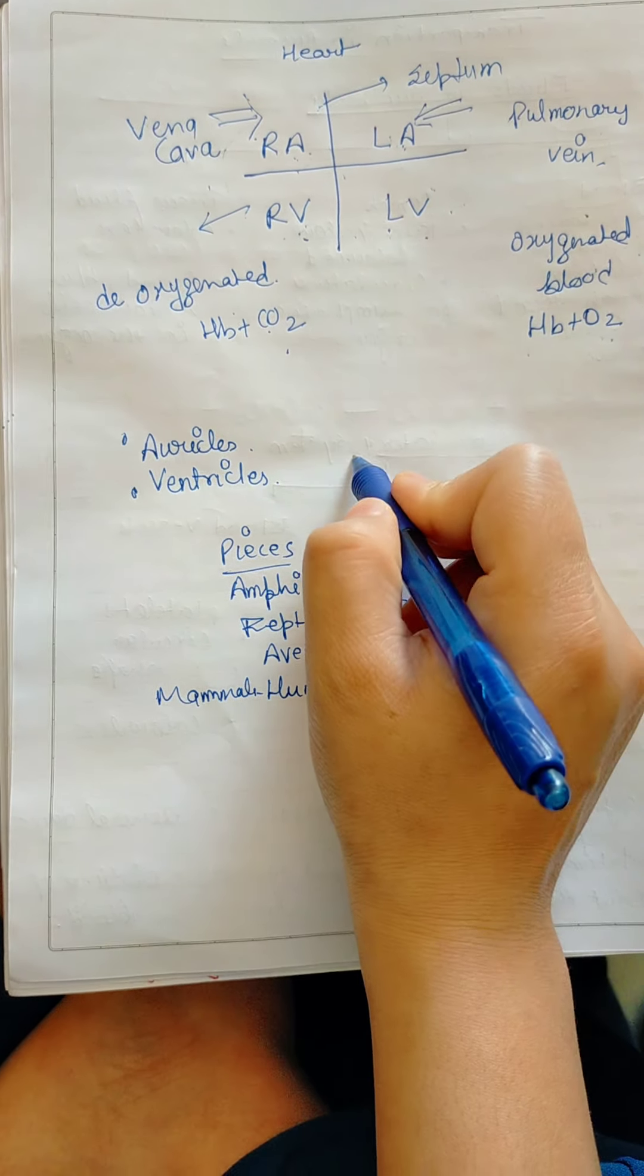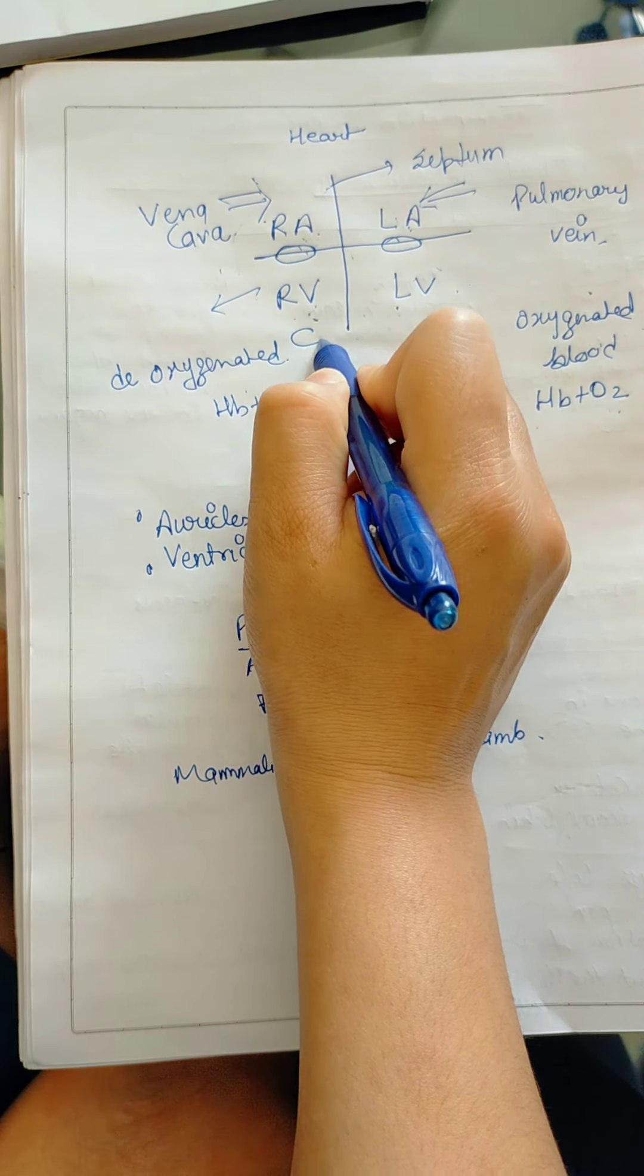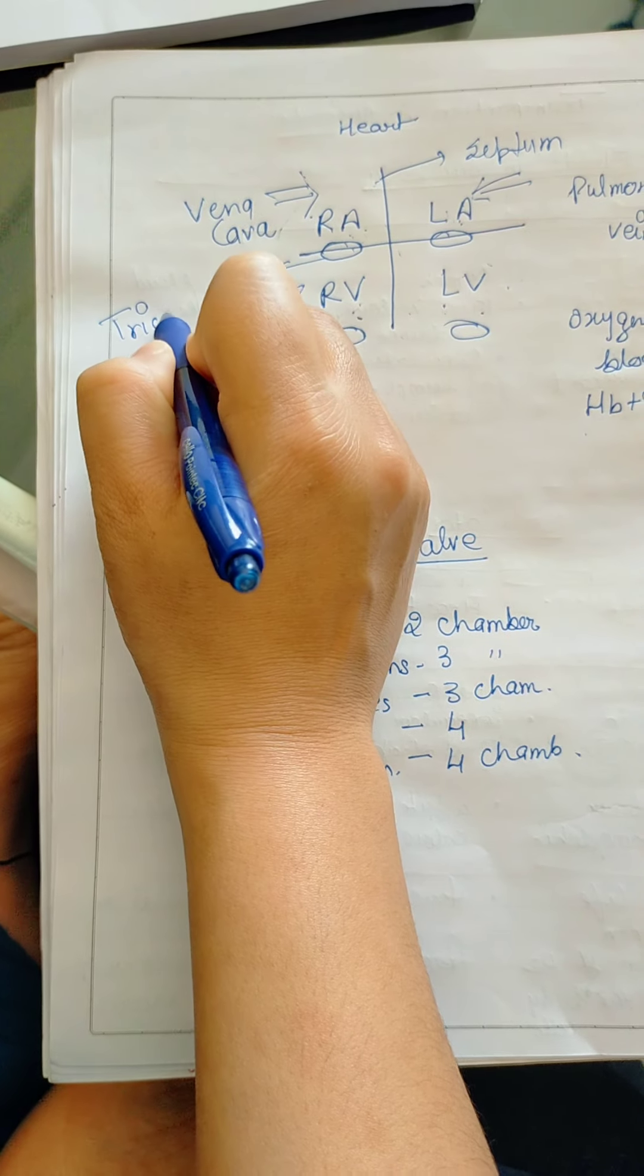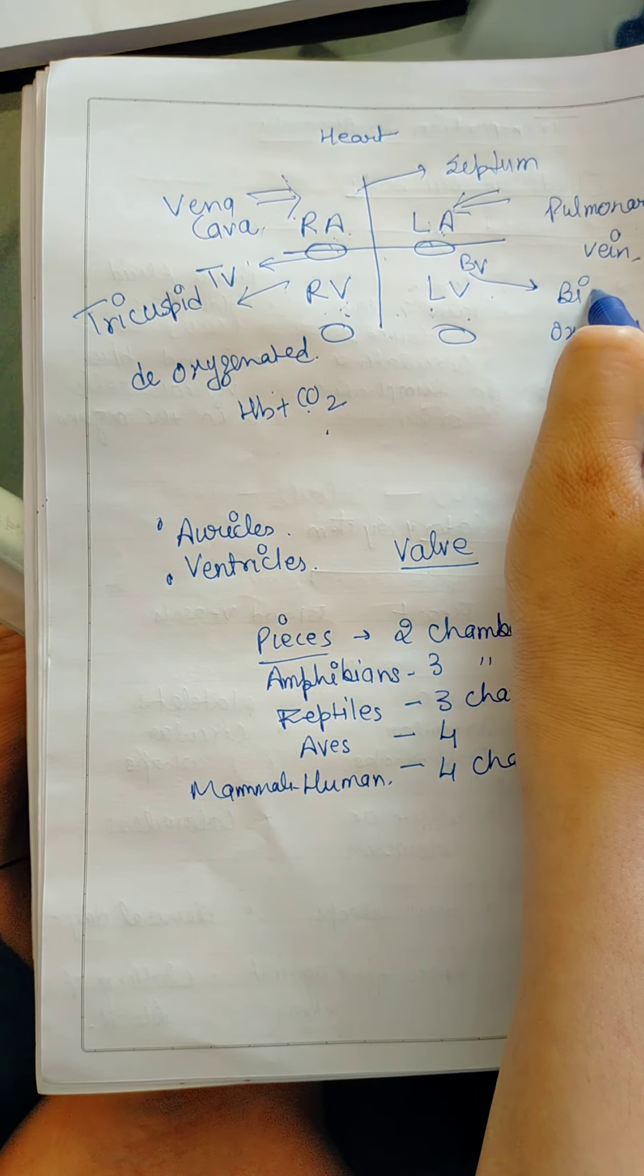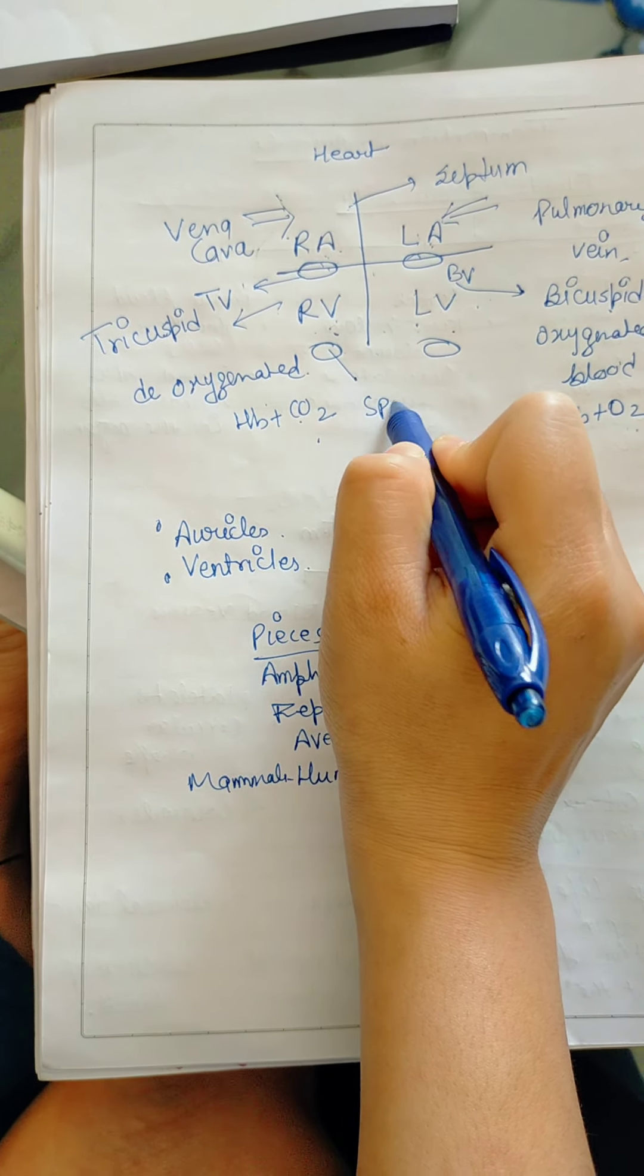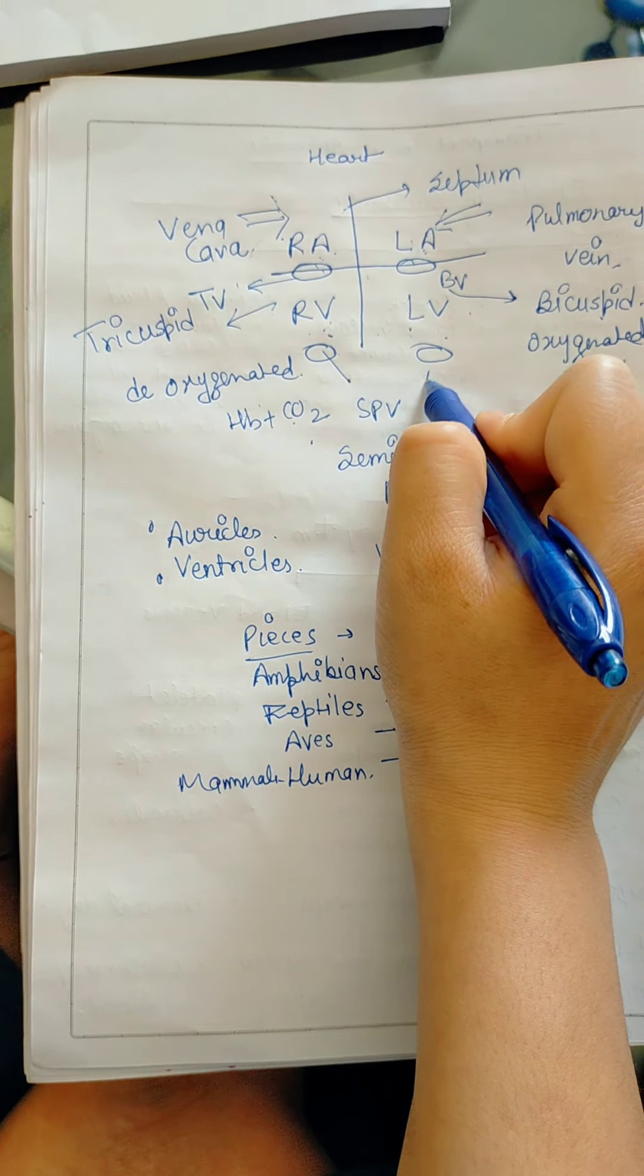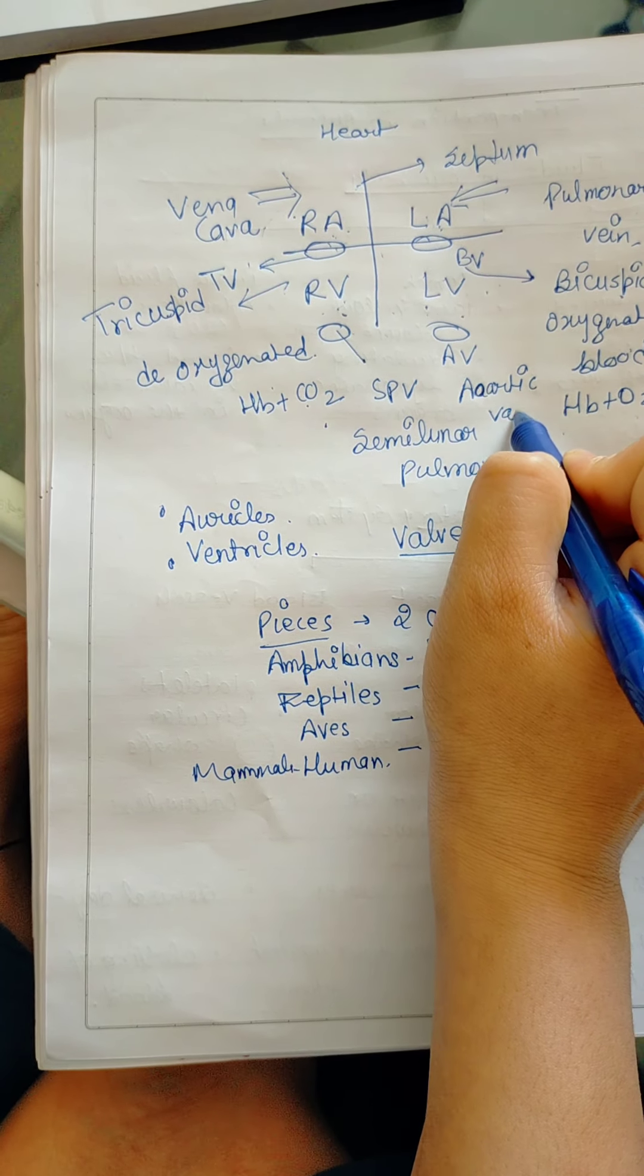The last thing is valve. Heart has 4 valves. What is the name? The valve is the right valve, TV, tricuspid valve. And here is the BV, bicuspid valve. This is the SPV, semi-lunar pulmonary valve. And this is AV, aortic valve.